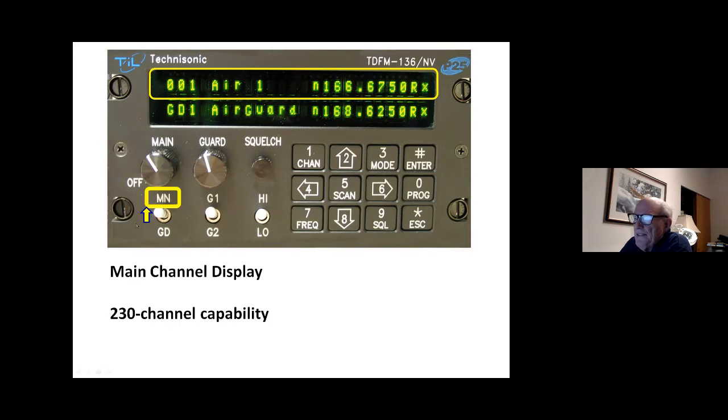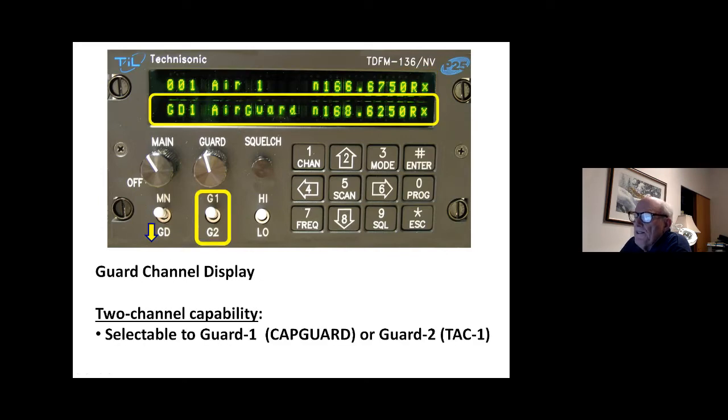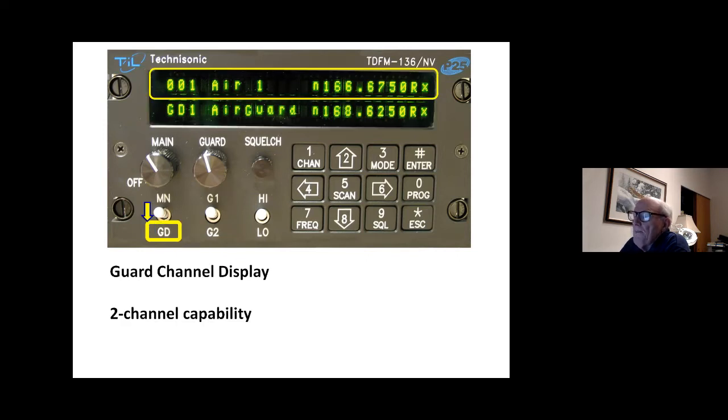The main channel display is on the top. And over here on the left side, there's the transmitter switch, main or guard channel. Here we've got the main channel selected, and we're seeing the main channel information on top. When you're in the guard position, we're looking at the lower display. And now the guard one and guard two switch come into play, because it's a two channel receiver.